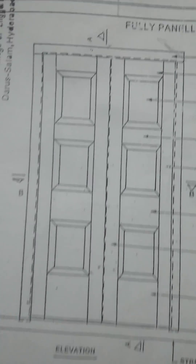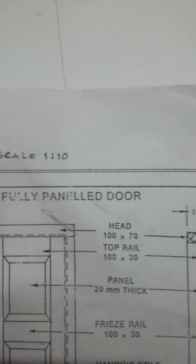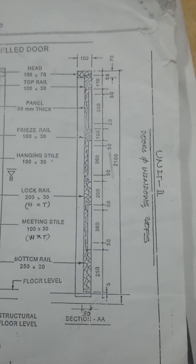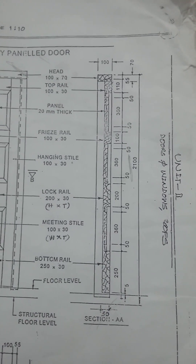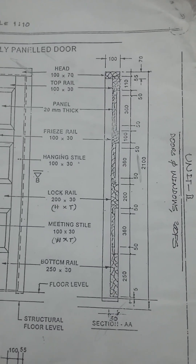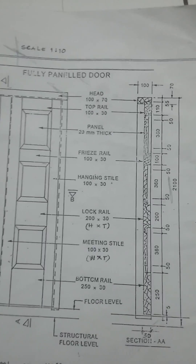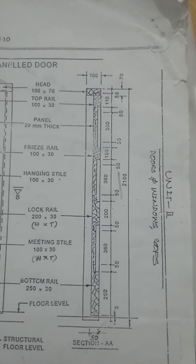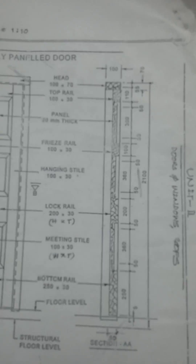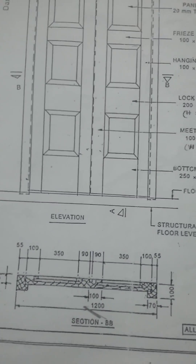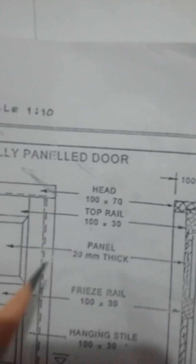Hello friends, today we have a topic on the fully paneled door. The scale we are using is 1 to 10. These are the standard measurements of length and breadth for the fully paneled door. The standard length is 2100 and the standard breadth is 1200.